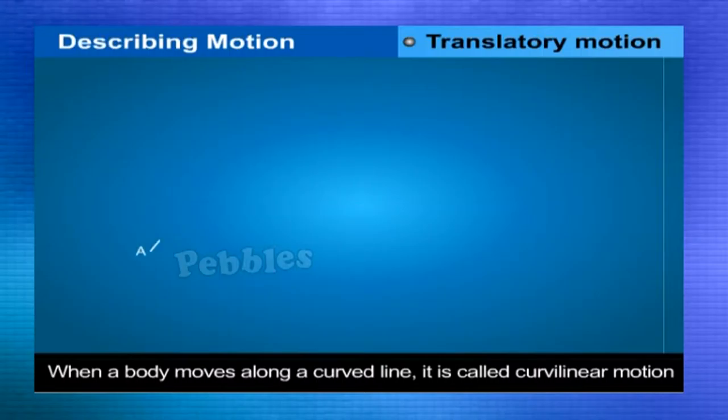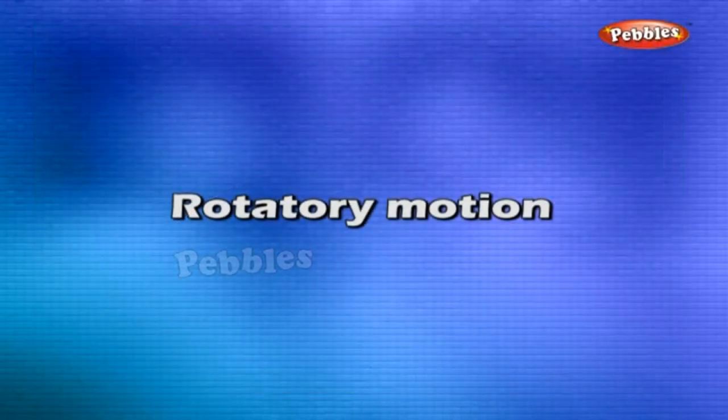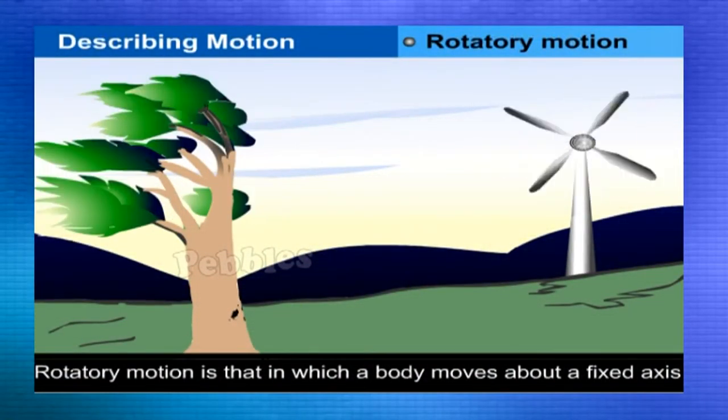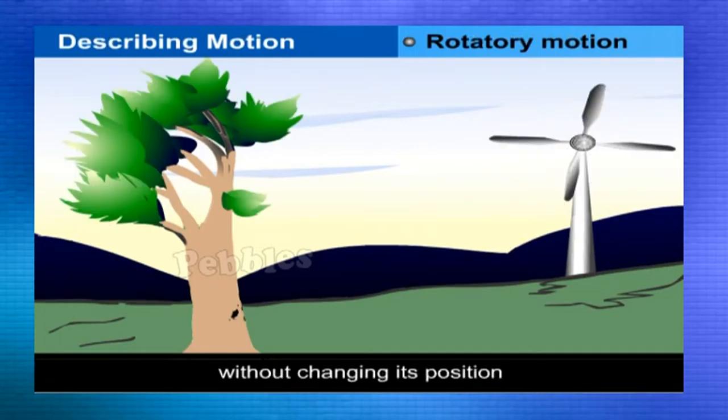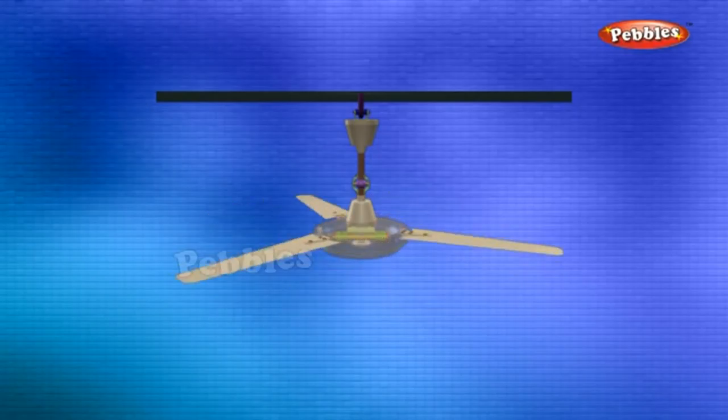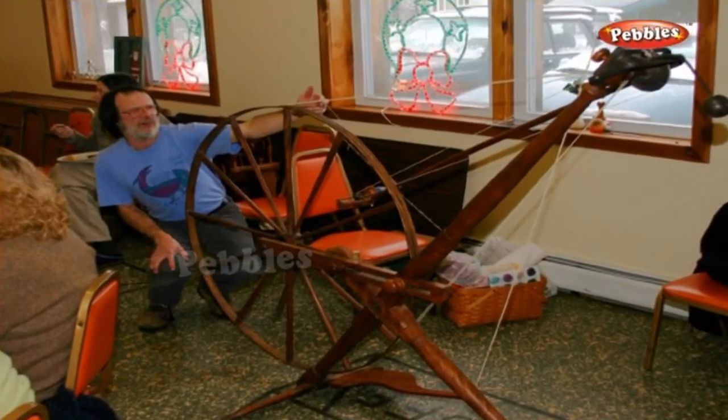Rotatory motion is that in which a body moves about a fixed axis without changing its position. Examples are windmill, fan, spinning wheel, etc.